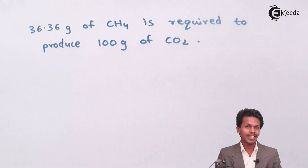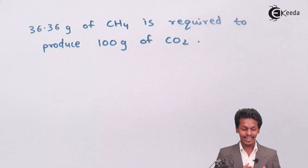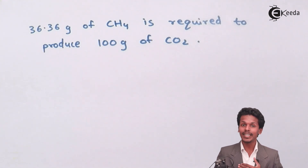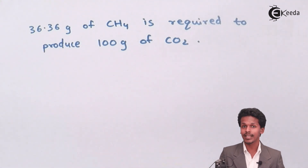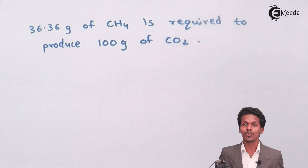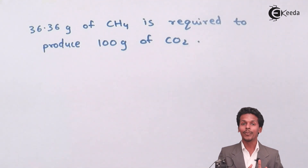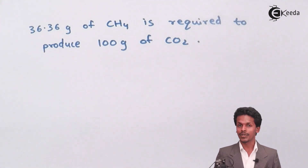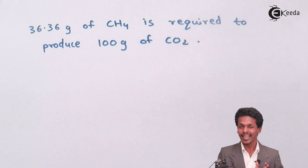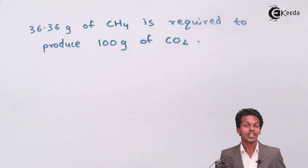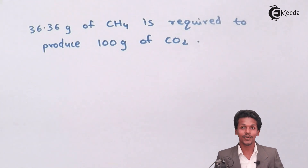This is the final answer. This numerical was based on stoichiometry, and we have analyzed it in a thorough and understanding manner. Even though this was a simple numerical, more complex ones in your exams can be solved the same way — by understanding chemical stoichiometry and how to determine the mass of reactants required to produce a given amount of product. Thank you friends for watching. Please share this video and subscribe to Ikeda channel.